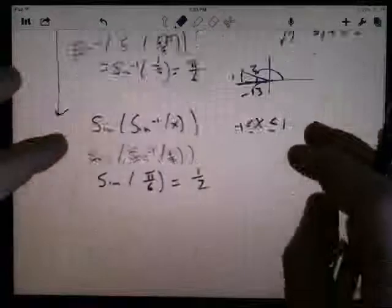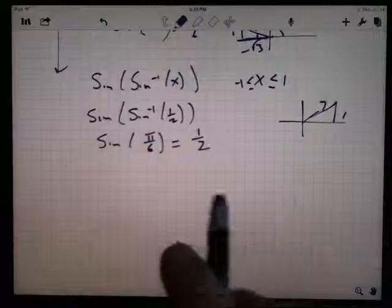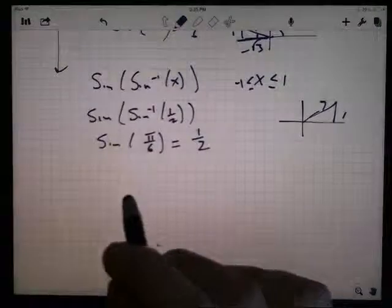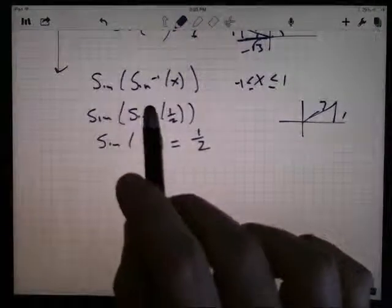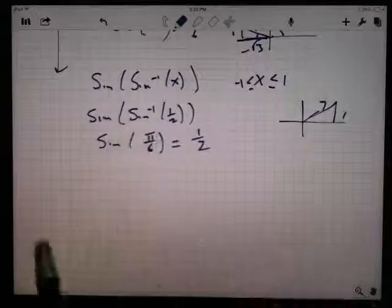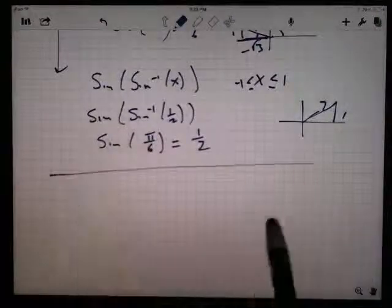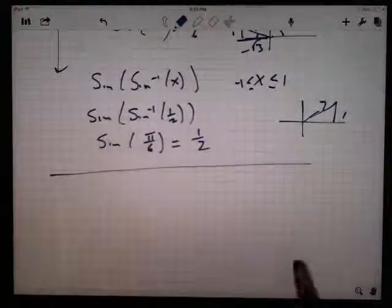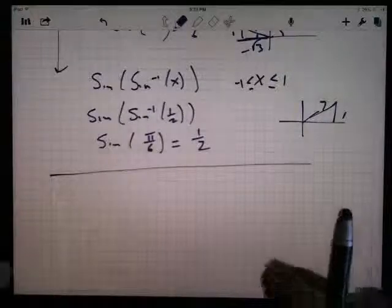Cosine and cosine inverse have similar properties. Tangent and tangent inverse have similar properties. It's just a matter of being careful as to where your output is and where your input is.